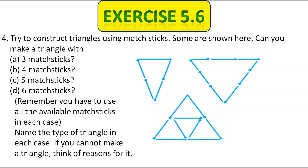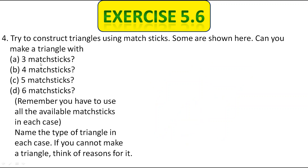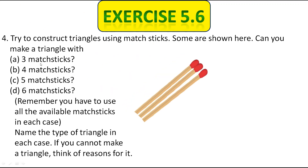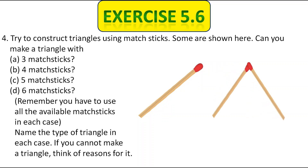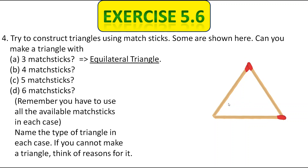First, we have to use three matchsticks. So here I took three matchsticks and made a triangle. We got a triangle with equal length sides — why equal length? Because all the matchsticks are of equal length. So it is called an equilateral triangle.